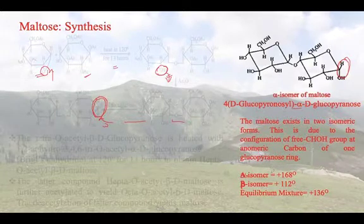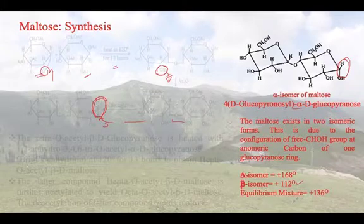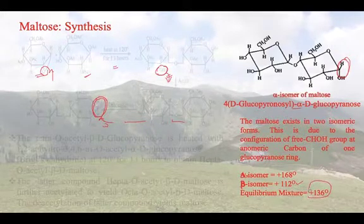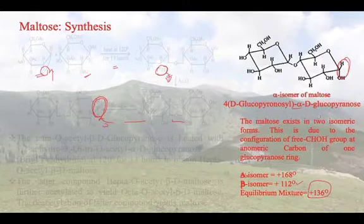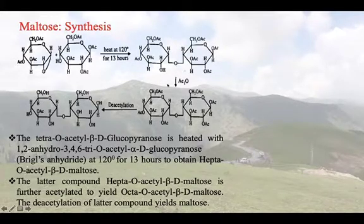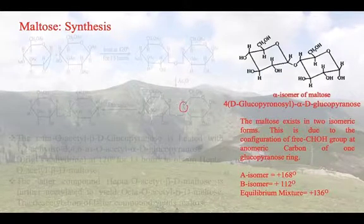The alpha isomer shows a specific rotation of 168° and the beta isomer shows a specific rotation of 112°. At equilibrium, the mixture shows mutarotation, with a specific rotation of 136°. By mutarotation, if a molecule shows this behavior, we can say it exists in different isomeric forms — possible because of the presence of a free anomeric hydroxy group. It has been found that it is the fourth carbon which connects the two rings, giving us 4-O-(alpha-D-glucopyranosyl)-alpha-D-glucopyranose.